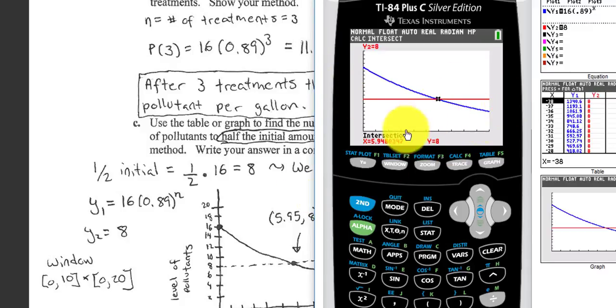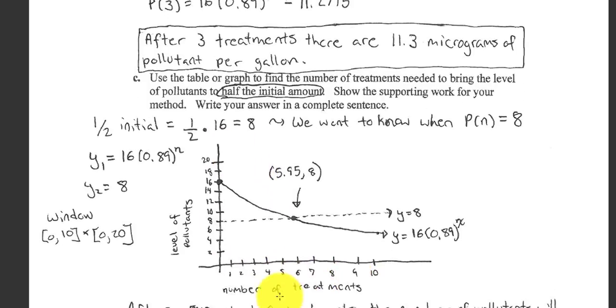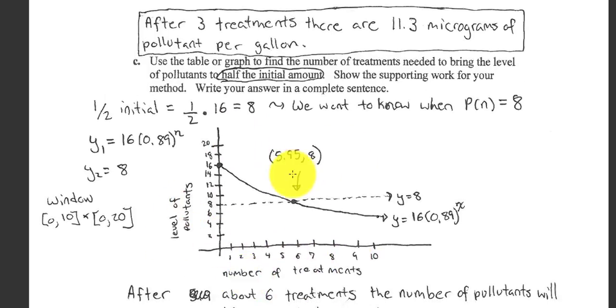So I would sketch this graph. Again, we don't need a Picasso, but sketch it, maybe show me a few tick marks, label the axis, and give me the point of intersection. So after about six treatments, the number of pollutants will be half the initial amount. I think that should do it.